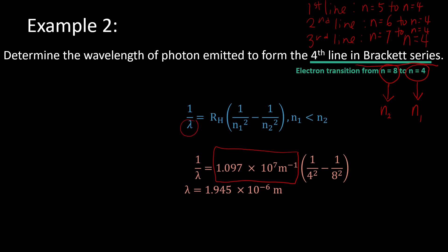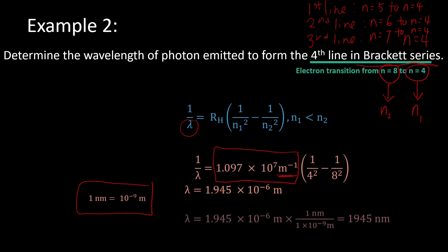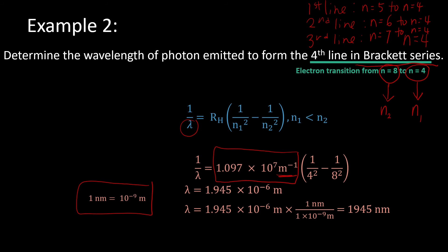We must take note of the units. To find wavelength, the Rydberg constant must have the unit per meter. After getting the wavelength in meters, sometimes we want to convert it to nanometers. We must know that 1 nanometer equals 10 to the power of negative 9 meters. To do the conversion, multiply the wavelength in meters by 1 nanometer per 1 times 10 to the power of negative 9 meters, so the meter units cancel out and the answer will be the wavelength in nanometers.